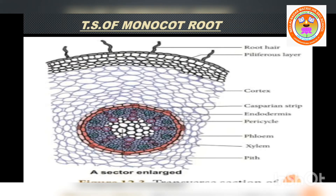A thin transverse section of monocot root reveals, from the periphery towards the center: epiblema, cortex, endodermis, stele, pericycle, vascular bundle, and pith.